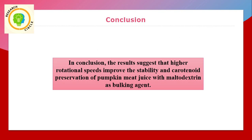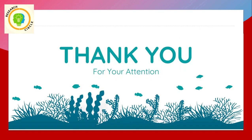We can conclude that higher rotational speeds improve the stability and carotenoid preservation of pumpkin meat juice with maltodextrin as a bulking agent. Thank you for your attention.